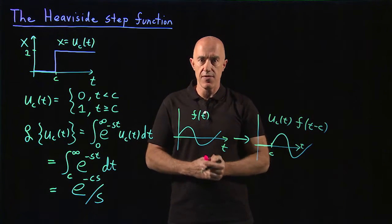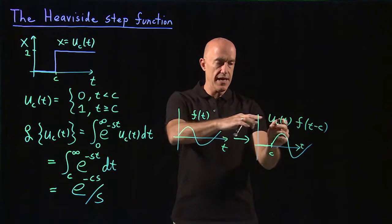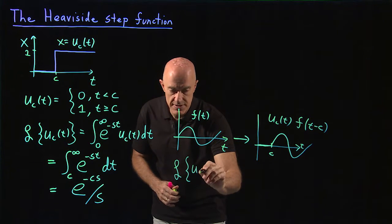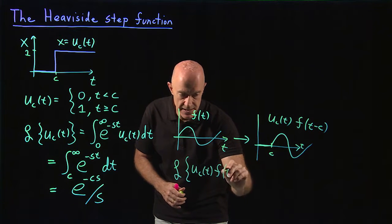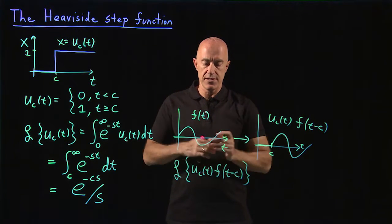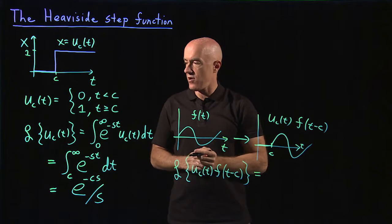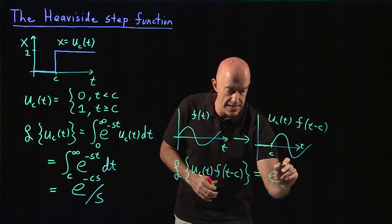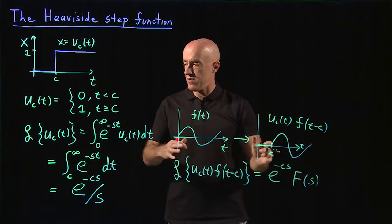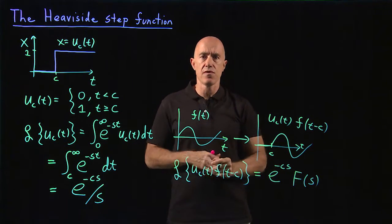This is one of the uses of the Heaviside step function. We'll need to know how to take the Laplace transform of u_c(t) times f(t minus c). You can work out that integral by substituting into the definition of the Laplace transform — you can try that at home. The result is e to the minus cs times F(s), which will also be in the table and useful for future calculations.